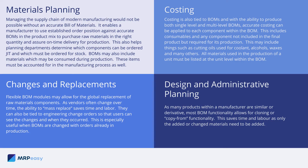Managing the supply chain of modern manufacturing would not be possible without an accurate bill of materials. It enables a manufacturer to use established order position against accurate bill of materials in the product mix to purchase raw materials in the right quantity and assure on-time delivery for production. This also helps planning departments determine which components can be ordered just-in-time and which must be ordered for stock.